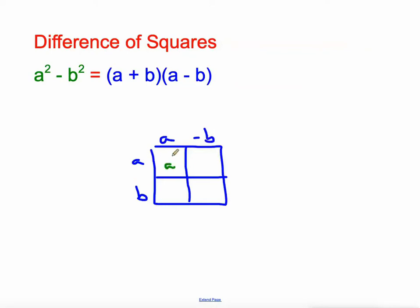A times negative b is negative ab. A times positive b is positive ab. And b times negative b is negative b squared.